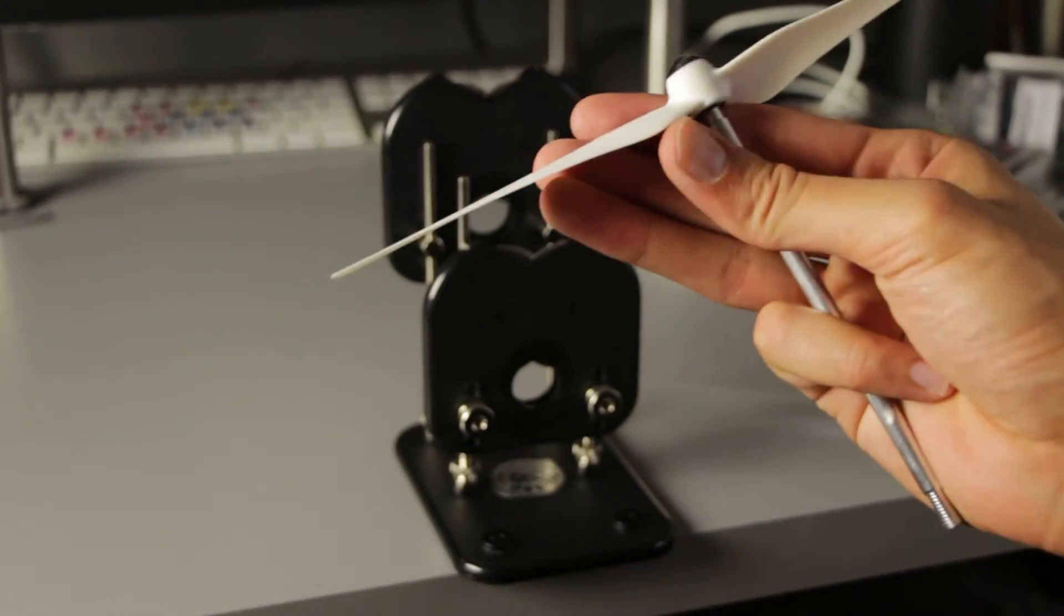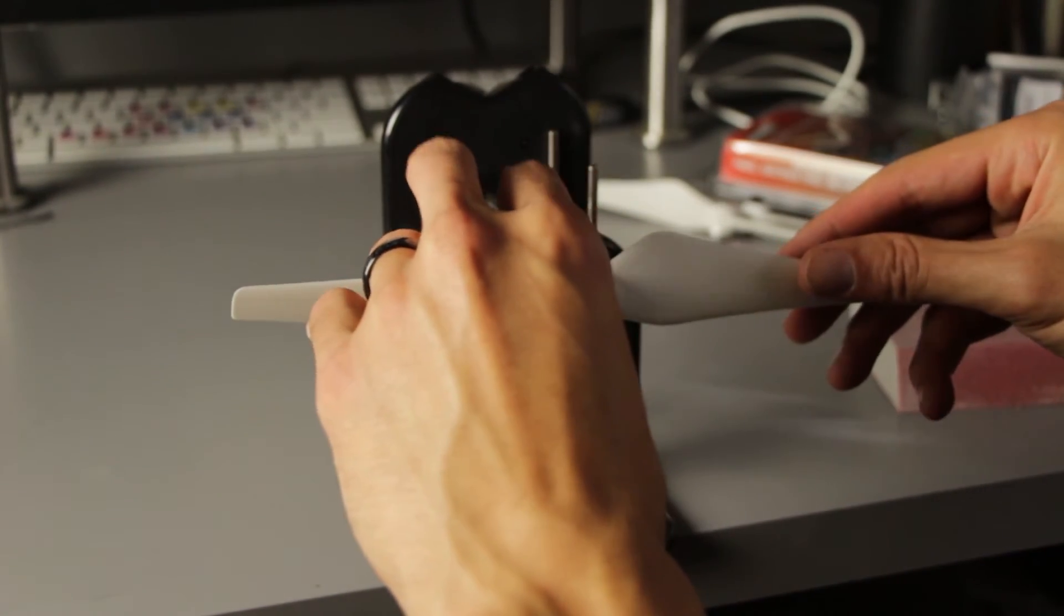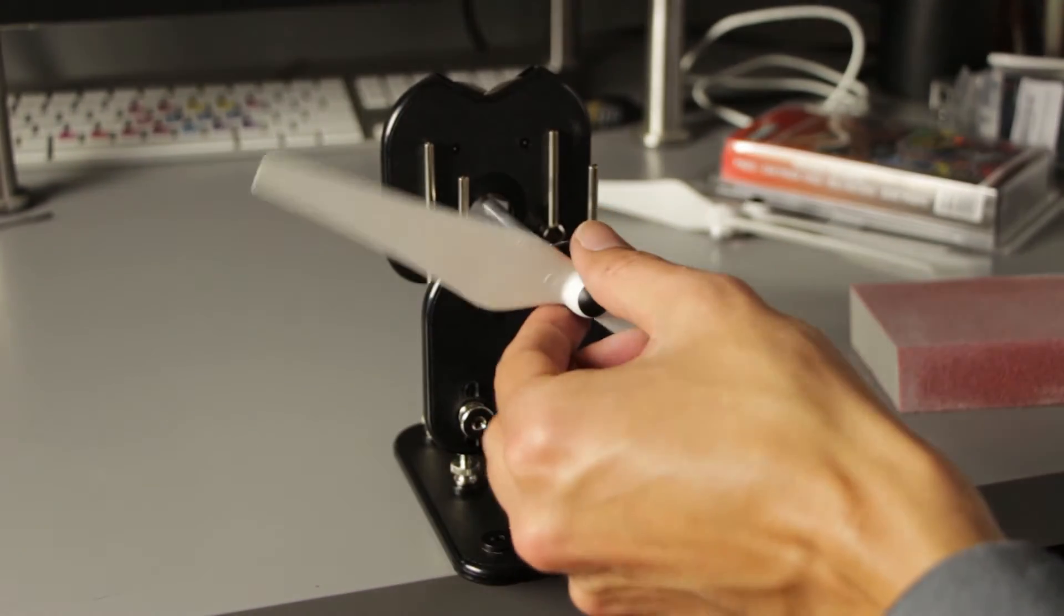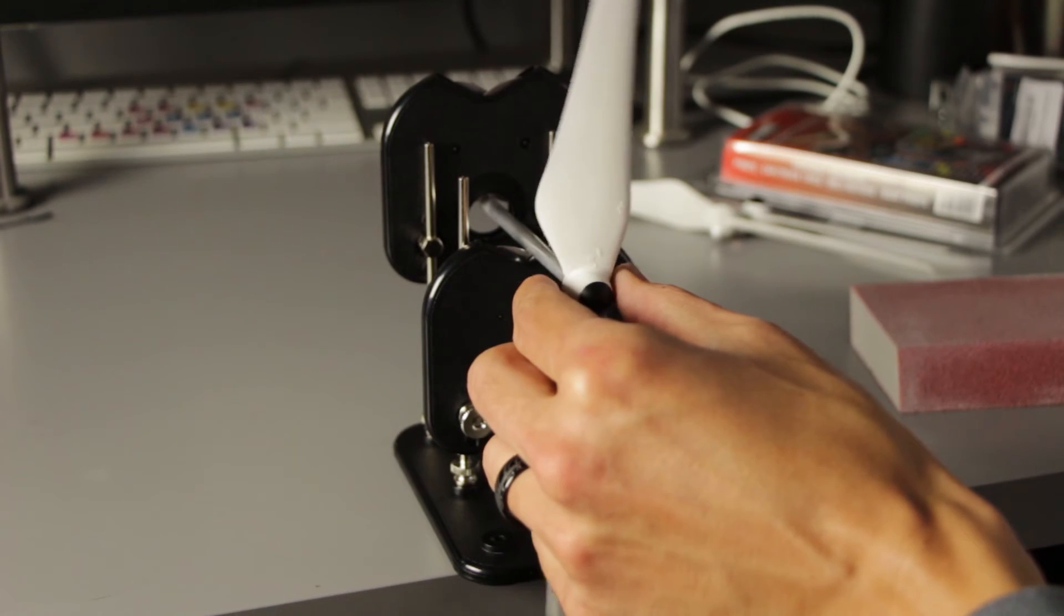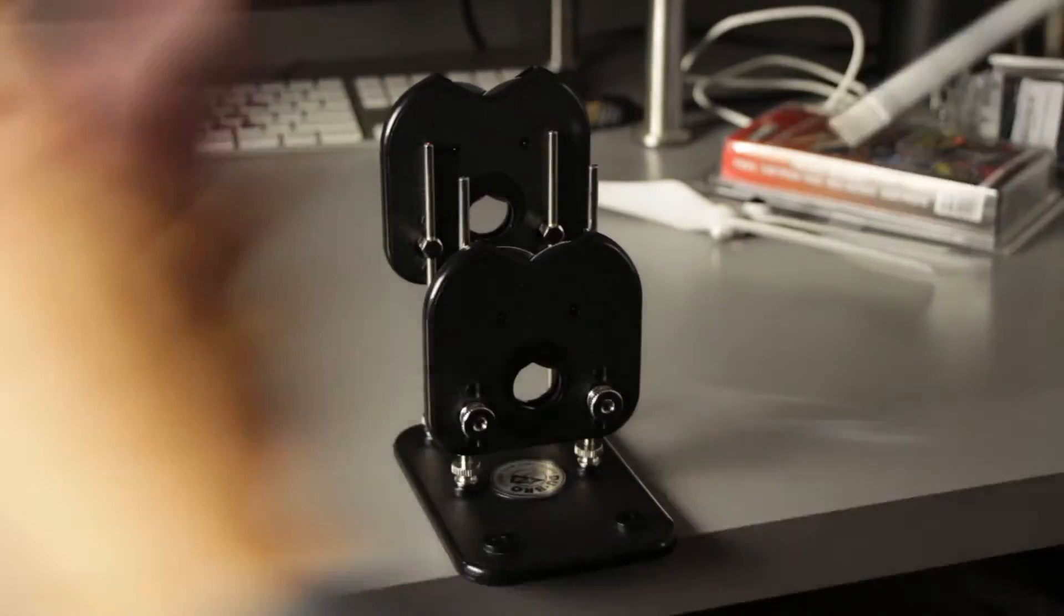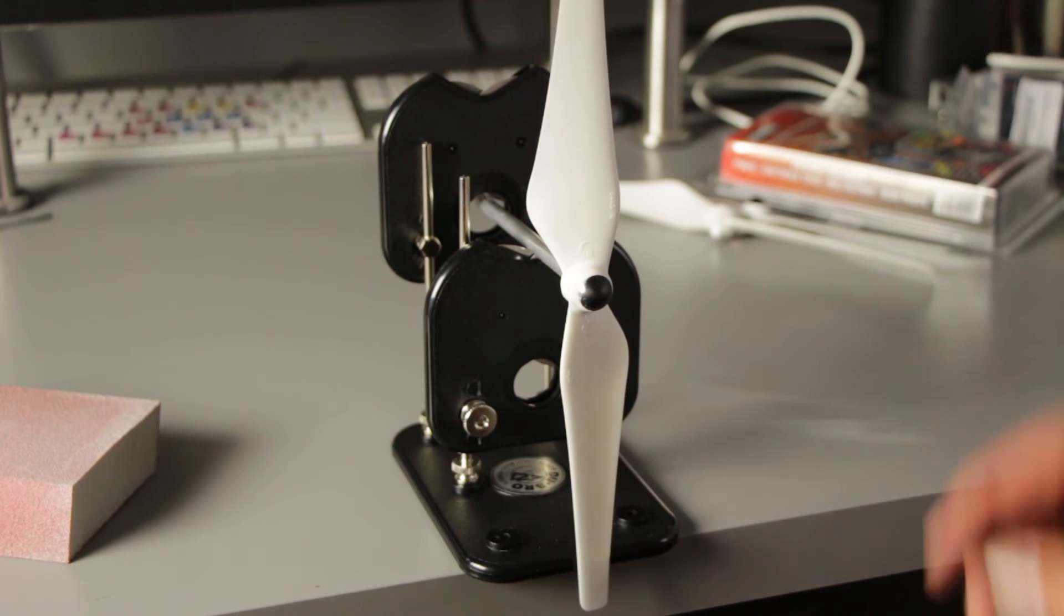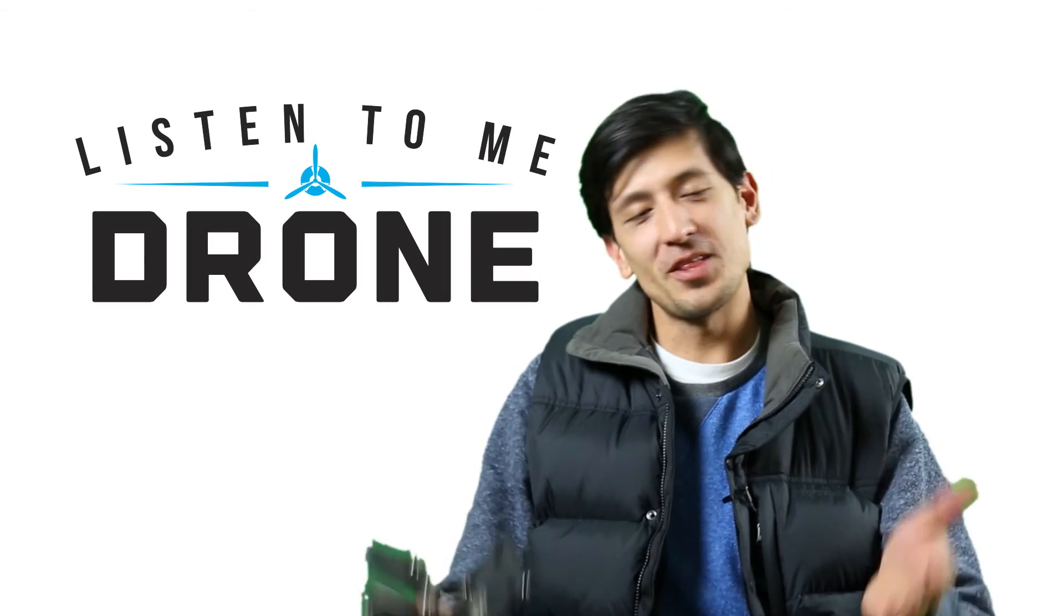Secondly, you want to check the vertical balance of your prop. Again, the side that's heavy you want to sand that side down and keep doing that sanding and checking until you achieve a horizontal balance and a vertical balance. That's pretty much more or less how you balance your props.